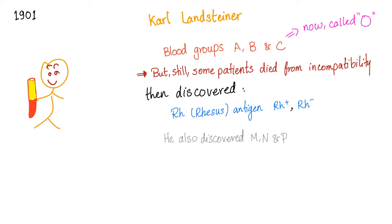In 1901, Karl Landsteiner discovered blood groups A, B, and what he called C — but now we call it O. Why O? Because there are no antigens in blood group O — O means there are no antigens. But still some patients died from incompatibility, so the same person discovered the Rh, or rhesus antigen system. He also discovered the MNP system.